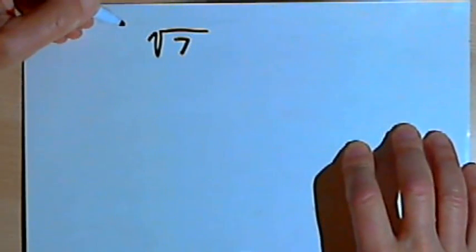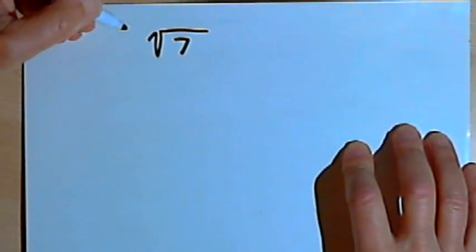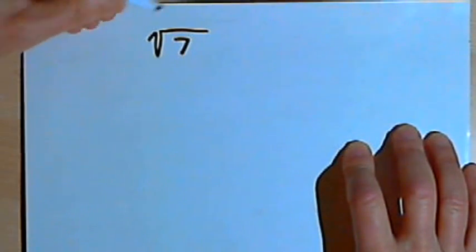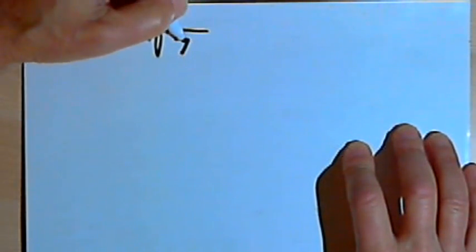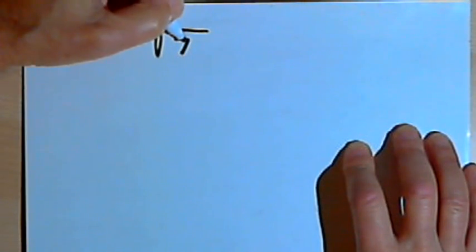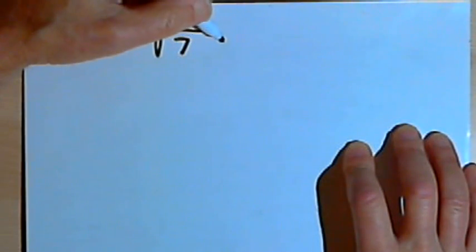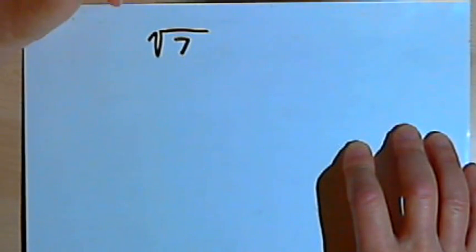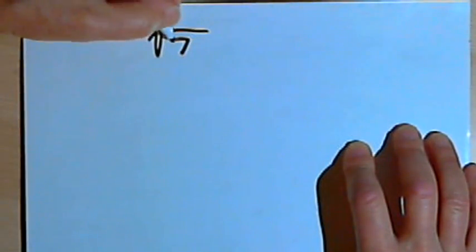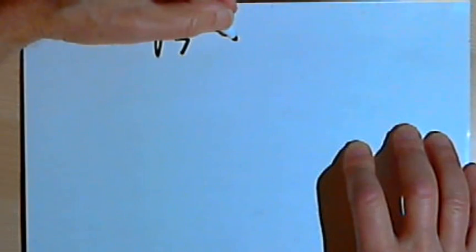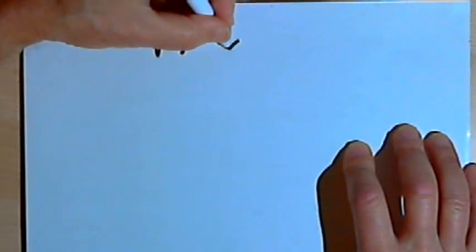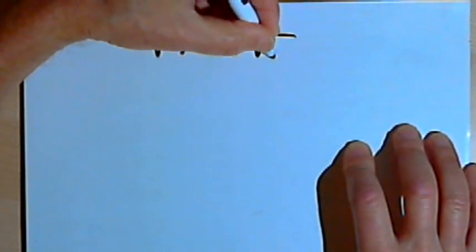The square root of 7 is an irrational number, so I can't write it perfectly, but I can try to come close to it. I'm going to look for the next largest perfect square beyond 7. Counting up from 7: 8 isn't a perfect square, but 9 is. So since 7 is less than 9, the square root of 7 would be less than the square root of 9.